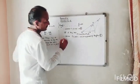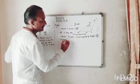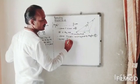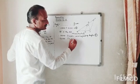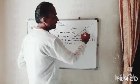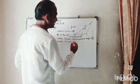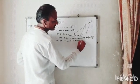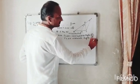Next, angle CAD is congruent to angle ACE. As I told you, this is a Z-type angle — these are alternate angles. That is statement number 3.